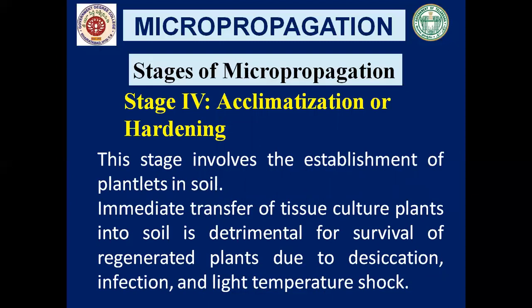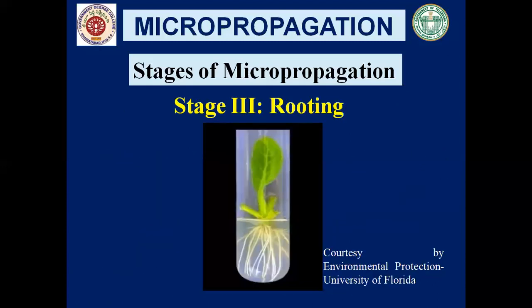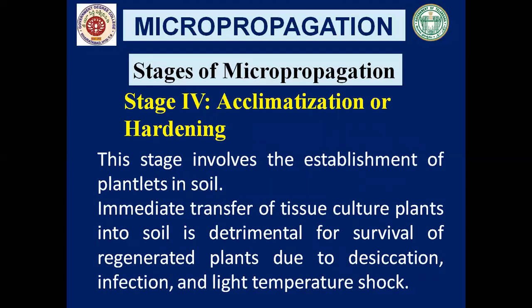After rooting, the last stage in micropropagation is acclimatization or hardening. Until now the plantlet has been growing in controlled environmental conditions in the growth room or culture room. When you place the same plantlet into a natural environment, it cannot sustain itself because it has grown under controlled conditions. So in the last stage, we have to make this plantlet get acclimatized or adjusted to the natural environment.